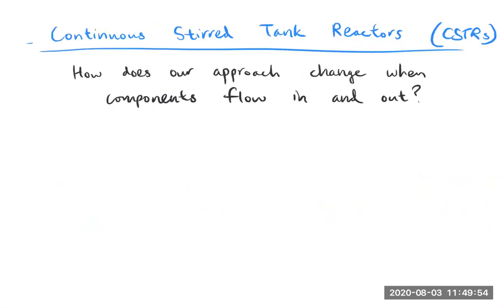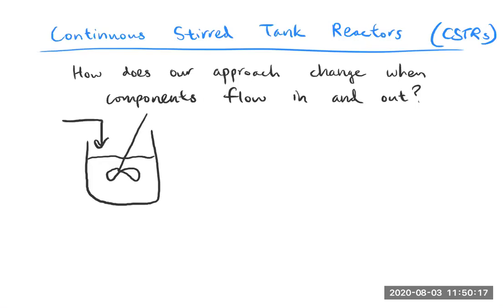Now diving into CSTRs: how does our approach change when components flow in and out? In a CSTR, you have flow going in and flow going out — a molar flow rate for species i in, and that out. Within the reactor you have a given reactor volume VR, a net generation term, and a given temperature at which the reaction is happening.